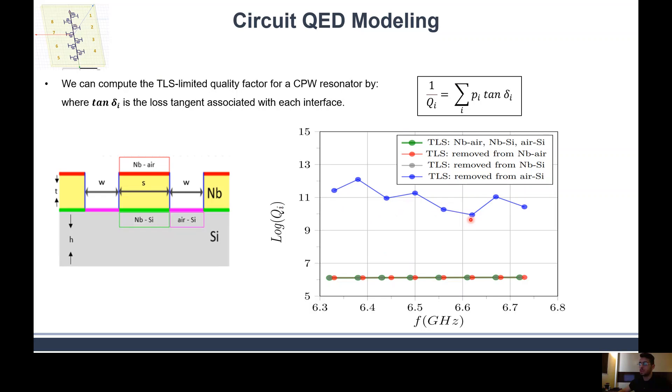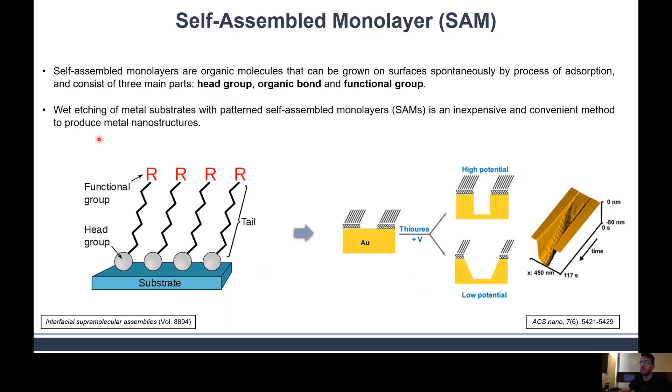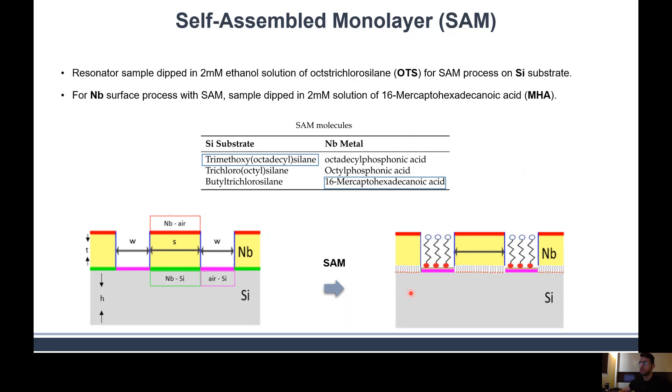How can we do that using an experimental approach? The answer is using a type of coating or cleaning the surface, and we use self-assembled monolayers, or SAM molecules. These SAM molecules are organic molecules that can grow on a specific metal surface through a spontaneous process of adsorption. These molecules consist of three elements: the head group, organic group, and functional group. This process of growing surface-assembled molecules is very convenient with all of the microfab processes, in which even at the edge of a metal where we grow SAM on top, these molecules can be still in place and fixed without any effect on the other parts of the process. We use OTS for the SAM process at the silicon interface, and we use MHA acid solution for the niobium surface process.